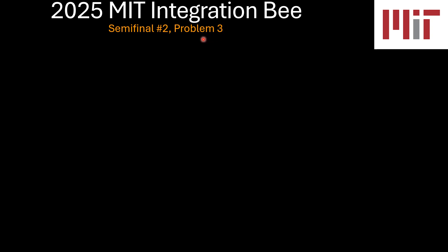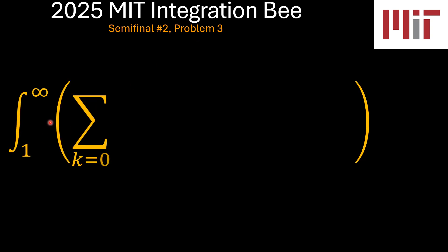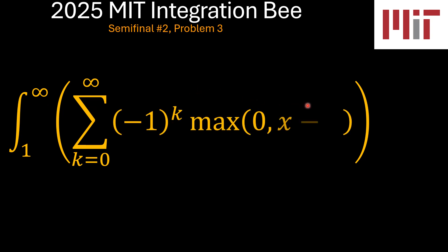Today's focus is problem number three of semi-final number two of 2025 MIT Integration Bee, which is the definite integral from x equals 1 to x tending to infinity of the inverse of the square of the summation from k equals 0 to infinity of negative 1 to the power k times the maximum between 0 and x minus k. This is an interesting problem — let's see how we may be able to solve it.